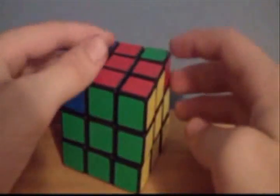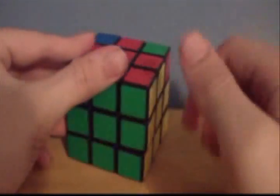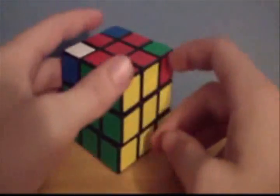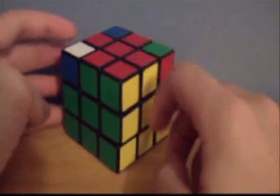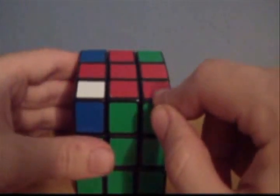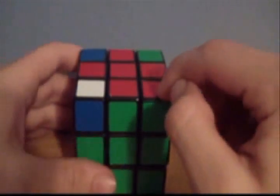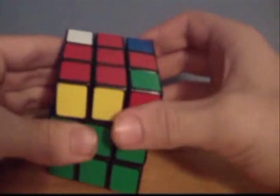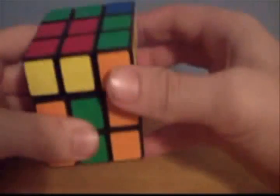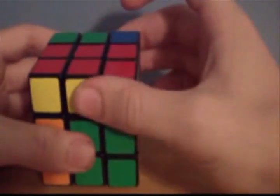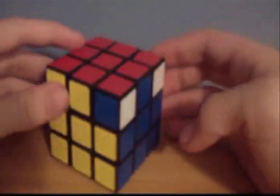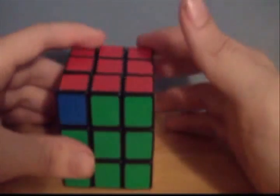Now you're going to try to find a corner that matches. This one just happens to be all right, but it doesn't have to match up perfectly like that. It just has to be the right colors with the right side. Now what you're going to do is have that corner to the bottom right of you, right here, and you're going to do up, right, up inverted, left, up, right inverted, up inverted, left inverted. And you'll have supposedly more corners.